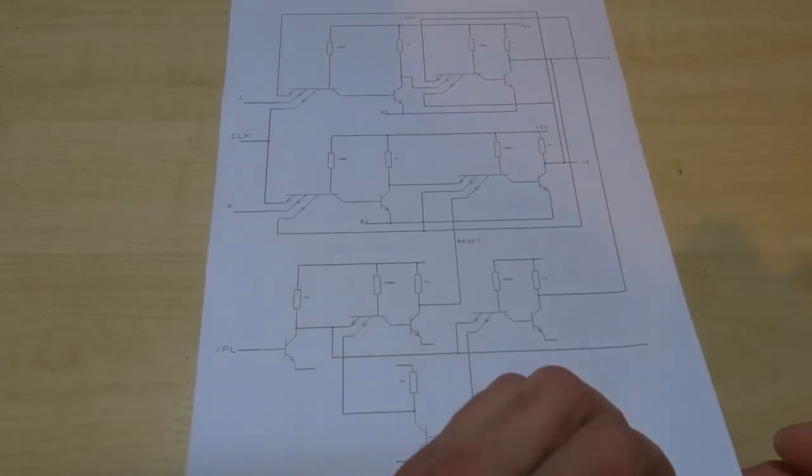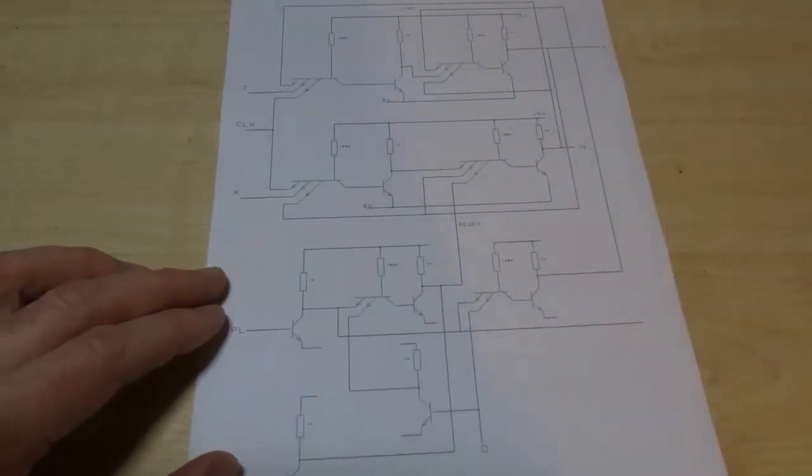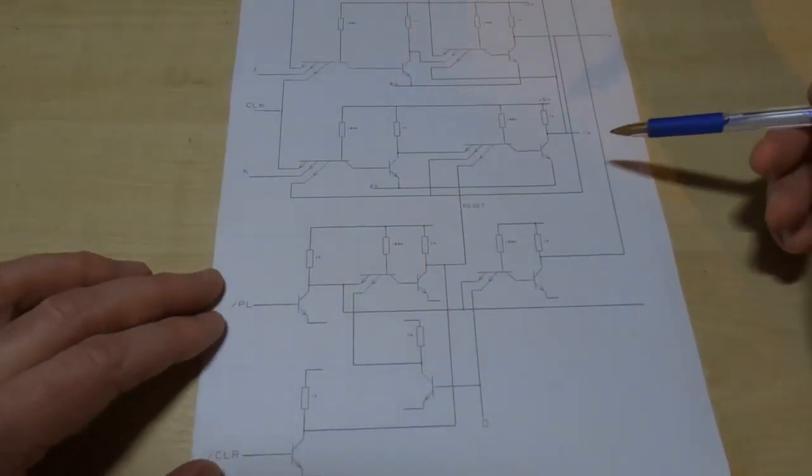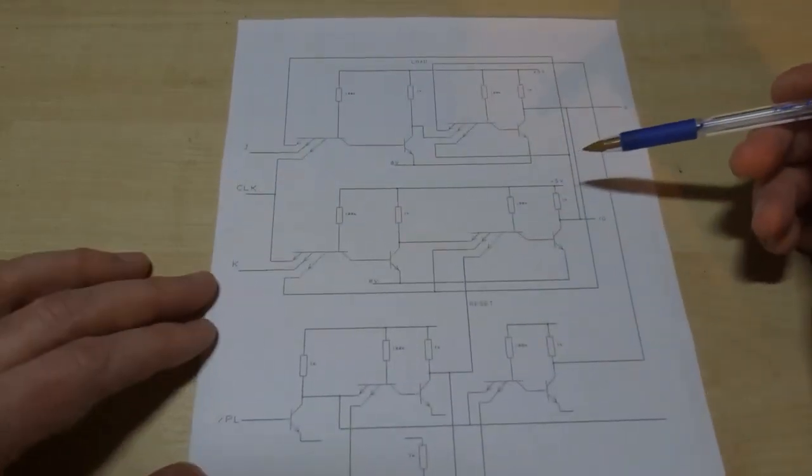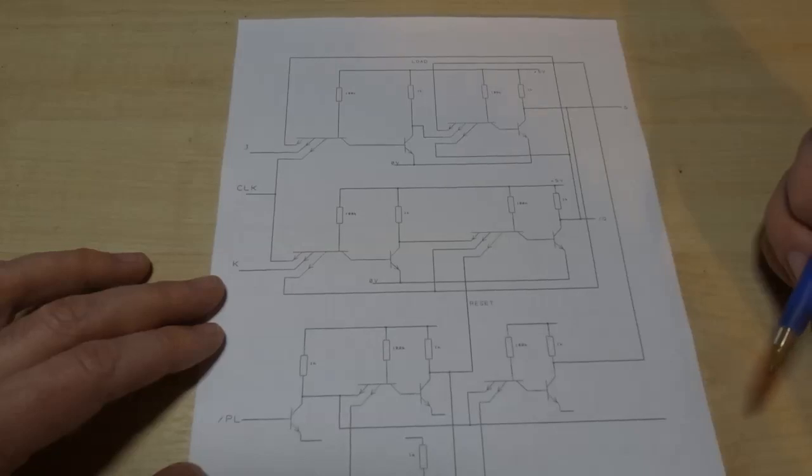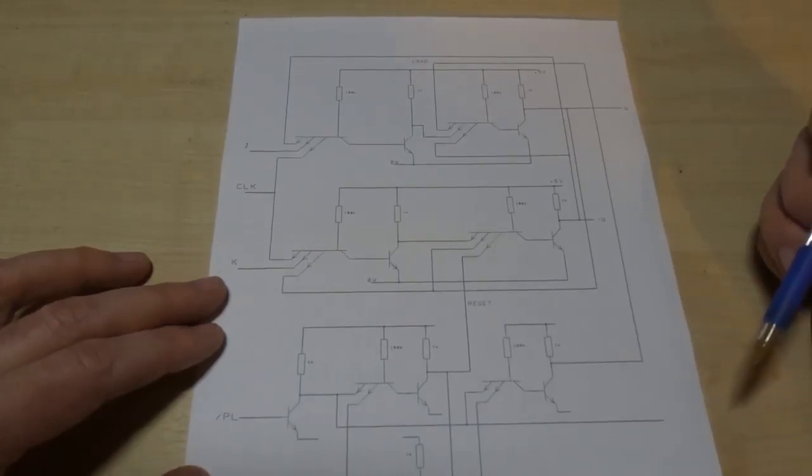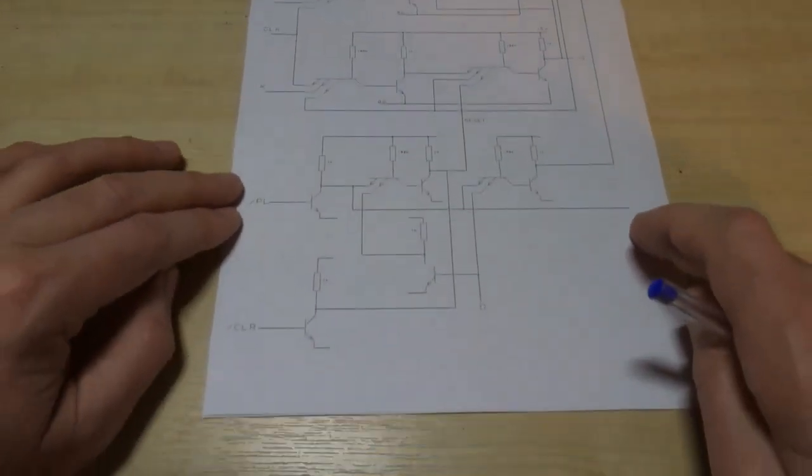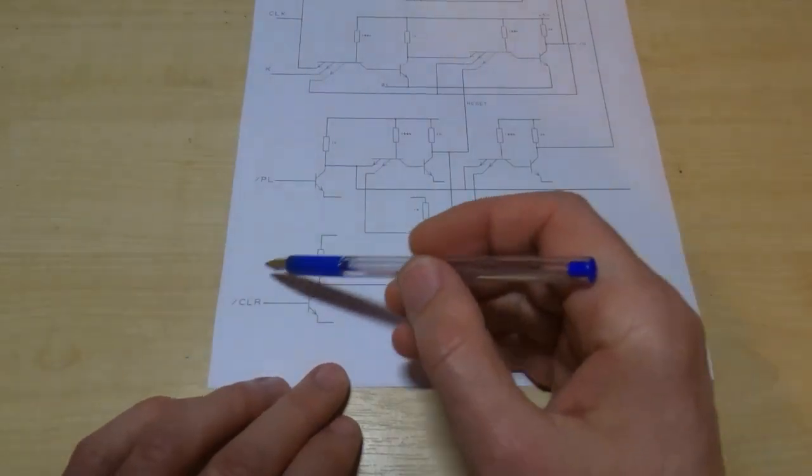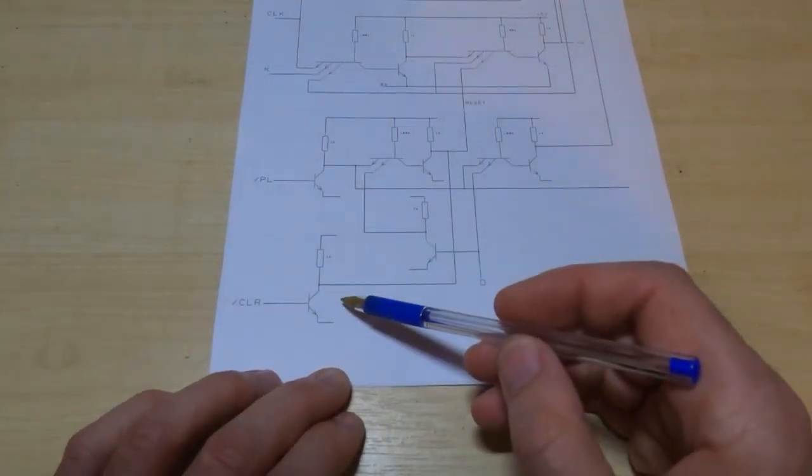So as you can see it's getting quite complicated already and there is yet more elements that we need to add to it. So the next one is we need to go to clear the flip-flop or the counter. Now you could say well what you just loaded zero value into it. Well when you clear the processor or reset the processor you're not running code so it needs to have an explicit clear function.